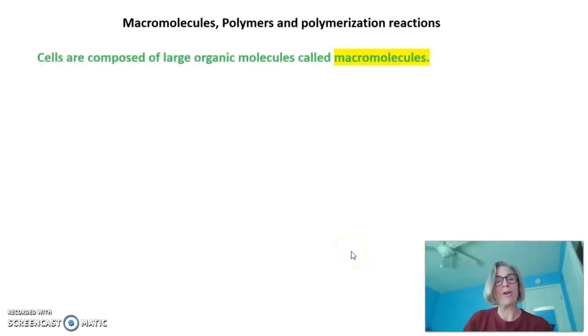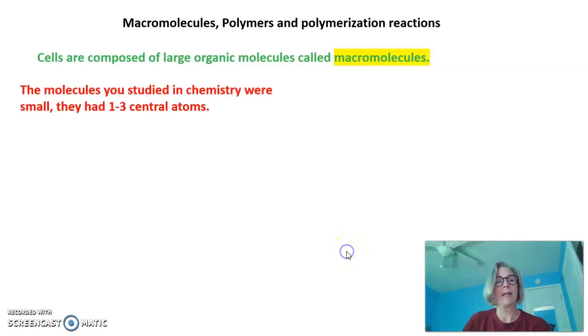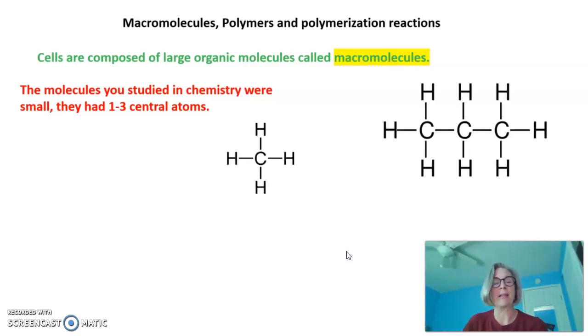Cells are composed of large organic molecules called macromolecules. The molecules you studied in chemistry were small. They had between one and three central atoms.